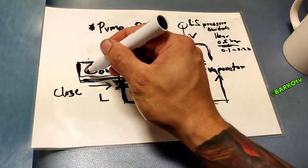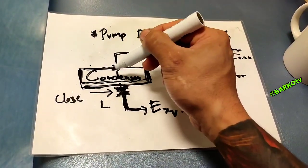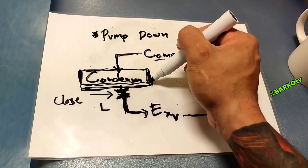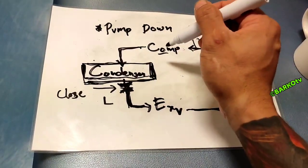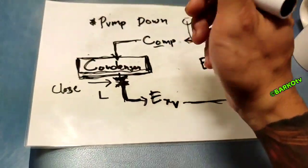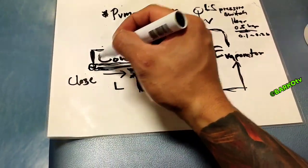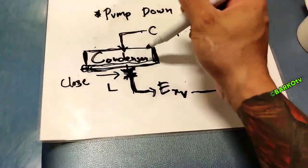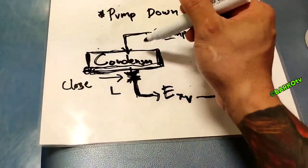In marine air conditioning units, there is a sight glass at the condenser which allows you to see the total amount of refrigerant being collected. You can see the level rising in your condenser through the sight glass as the refrigerant is pumped down into it.